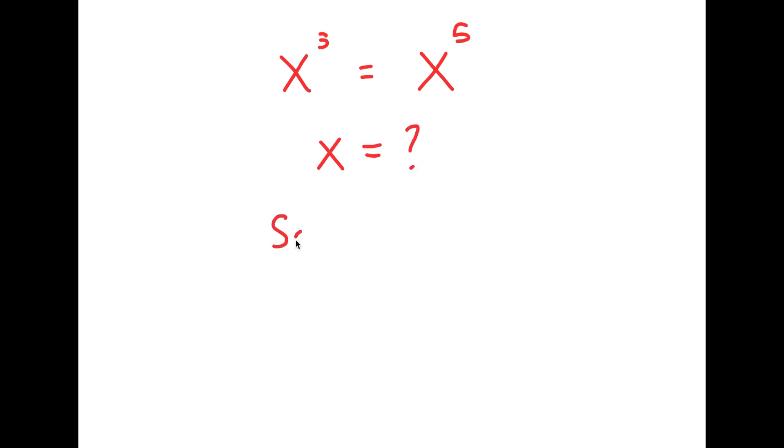And now for my solution. What I'm first going to do is subtract x to the power of 5 on both sides. So I get x to the power of 3 minus x to the power of 5 is equal to 0.